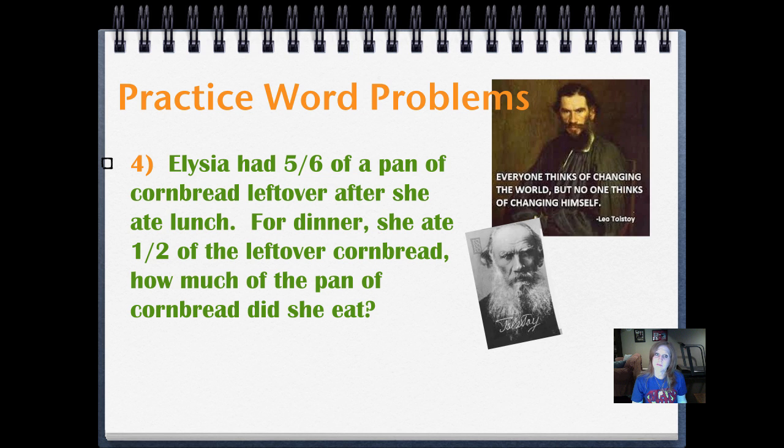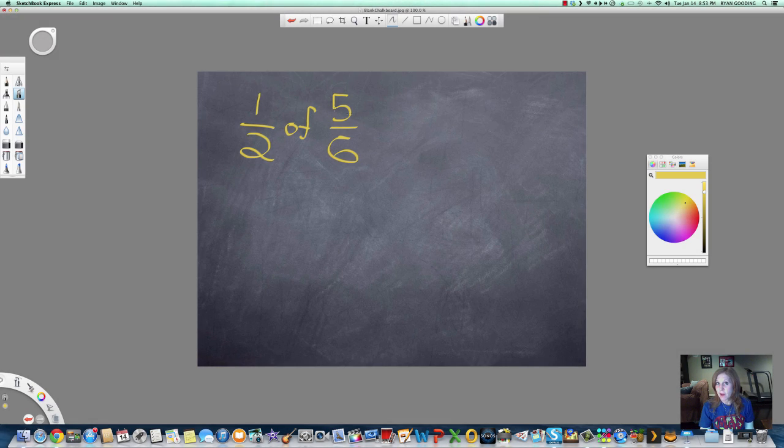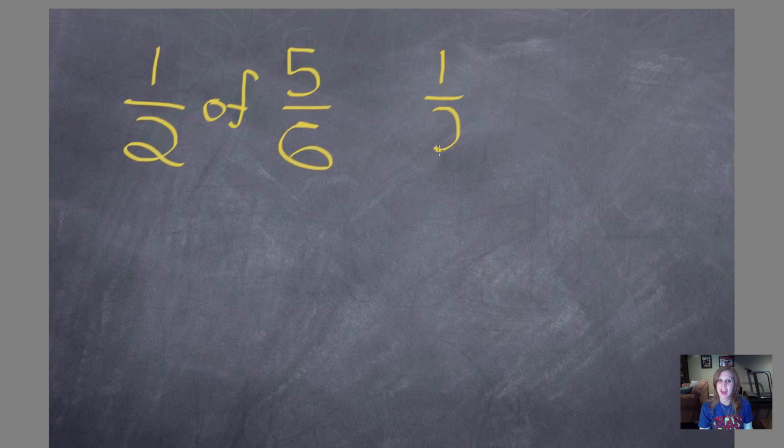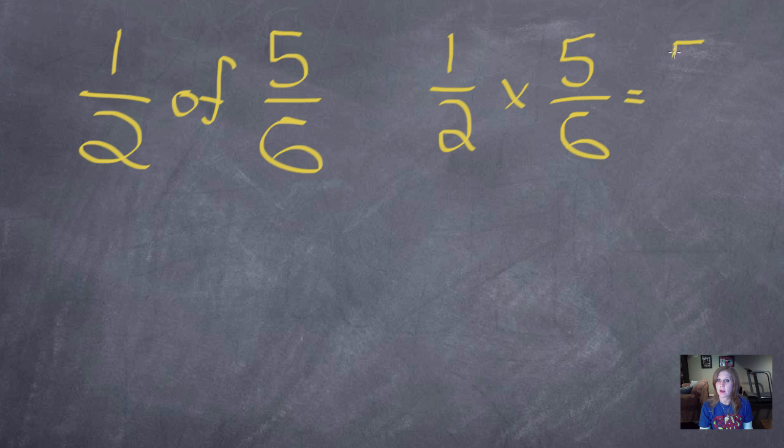Practicing word problems. Alicia had five-sixths of a pan of cornbread leftover after she ate lunch. For dinner, she ate one-half of the leftover cornbread. How much of the pan of cornbread did she eat? Go ahead and pause it, figure it out, write it in your journal, and push play when you're ready. Did you write in words because it was a word problem? Alicia ate five-twelfths of the pan of cornbread for dinner. Let's go ahead and use the standard algorithm on this one to solve it. So, if we were reading this, she had five-sixths remaining originally, and then she ate half of that. So, she has one-half of five-sixths, or one-half times five-sixths. So, if we multiply straight across, our numerators are one times five is five, and our denominators, two times six, is twelve. That is in simplest form. There is no number that we'll divide evenly into both our numerator and denominator.